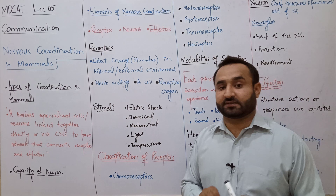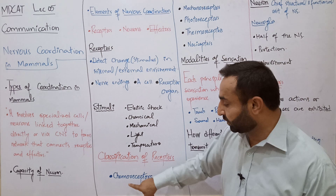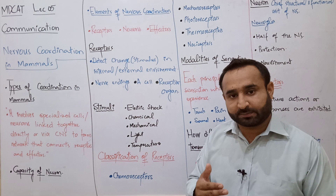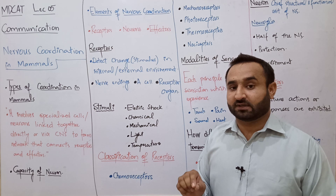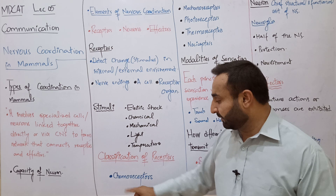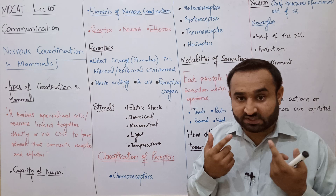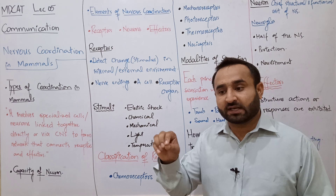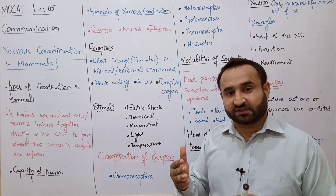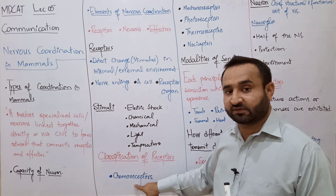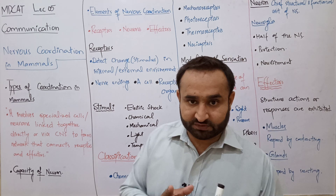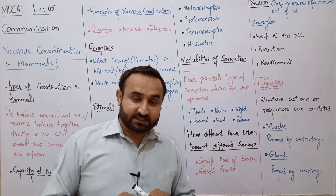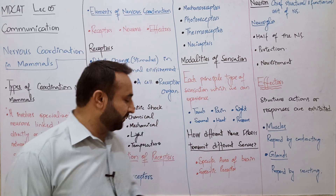Receptors کی classification: پہلے chemoreceptors — جو chemicals کو detect کرتے ہیں۔ Chemoreceptors are those receptor structures which detect the presence of chemicals in the internal or external environment۔ Example: olfactory structures in our nose detect smell chemicals. اس کے علاوہ blood میں oxygen، CO₂، glucose، amino acids، اور fatty acids کی levels کو detect کرنے والے internal receptors بھی chemoreceptors ہیں۔